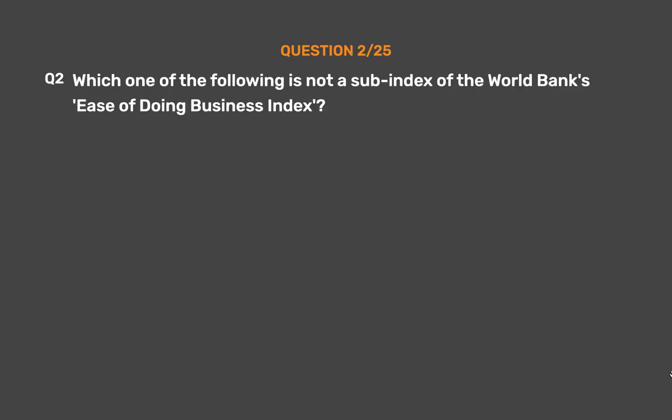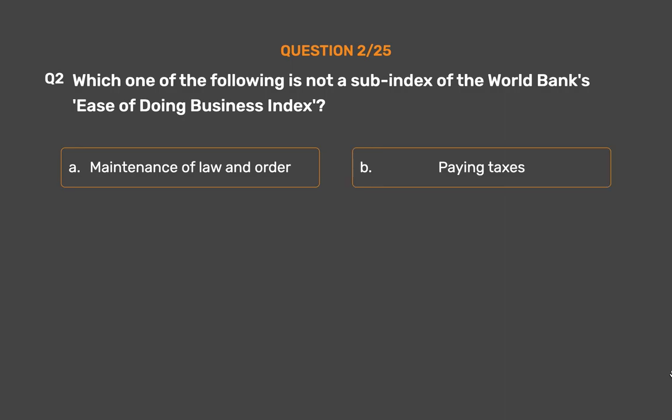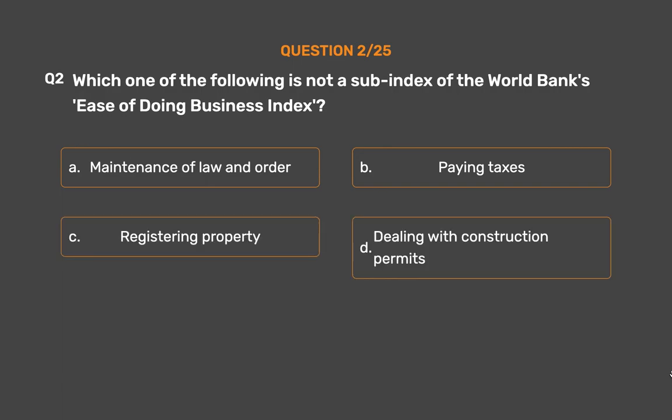Question No. 2: Which one of the following is not a sub-index of the World Bank's Ease of Doing Business Index? Option A: Maintenance of Law and Order. Option B: Paying Taxes. Option C: Registering Property. Option D: Dealing with Construction Permits.